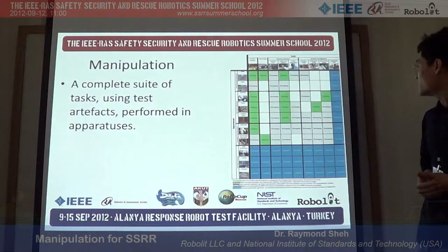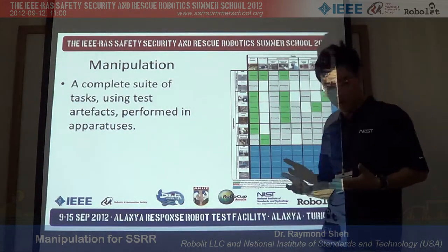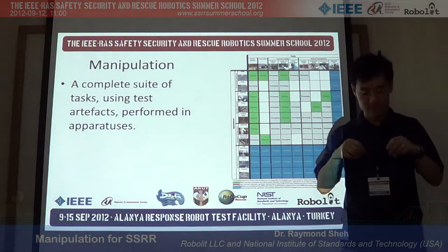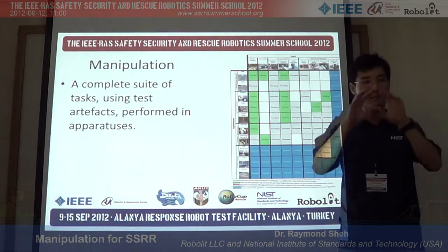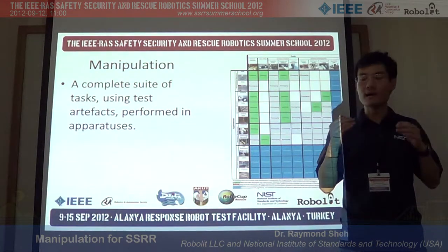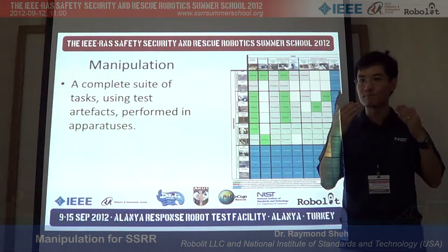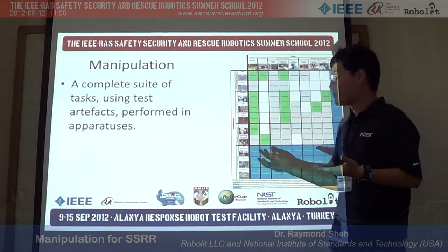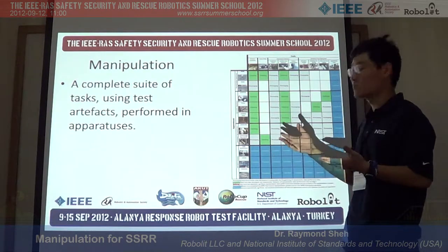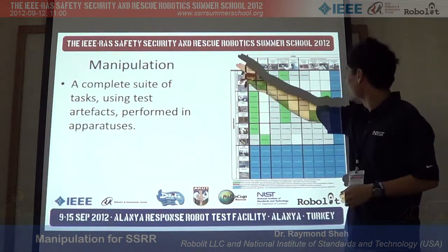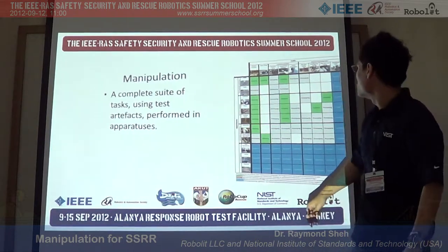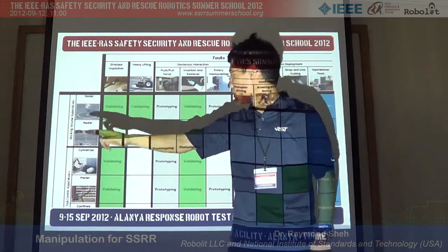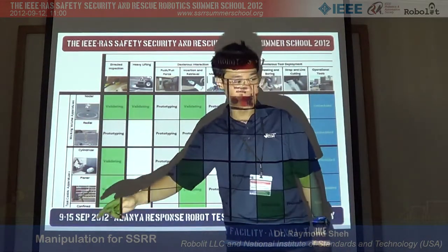At NIST, we are focused on measurement science. When we have a task such as inspecting a bag or inspecting a wall, it's very hard to get any actual measurement science out of it because there are so many variables. So what we do is break down these tasks — in this case we've chosen two dimensions, though there are many more — into elemental tasks that are performed in elemental apparatuses.